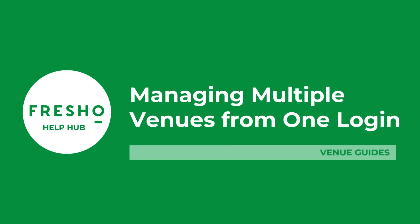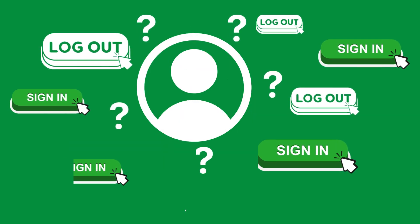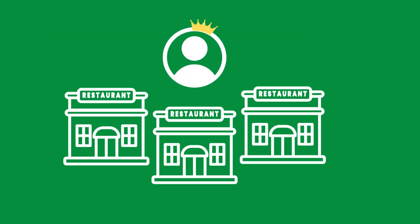In the event that you manage multiple venues or stores, we can create a head office hierarchy account for you and link all of your individual venues to it. Let's say you manage a restaurant which has just opened a new venue and another venue. Instead of going back and forth between various logins, our support team at Frisho can create a head office account for you. This way you'll be able to access all of your venues under your one user account.